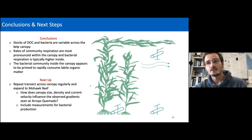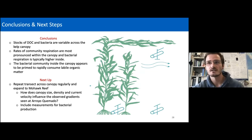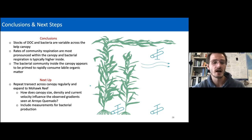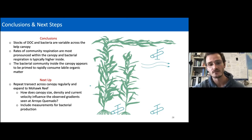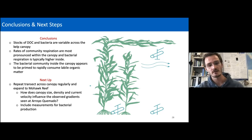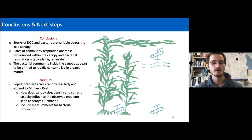From these first looks: stocks of DOC and bacteria are variable across the canopy, as are the rates of community respiration, which are significantly higher inside the canopy. The bacterial community inside the canopy appears to be primed to rapidly consume labile organic matter, whether from inside or outside the canopy. Next steps: repeat this transect regularly and expand to Mohawk Reef to understand how canopy size, kelp density, and current velocity influence the observed gradients.